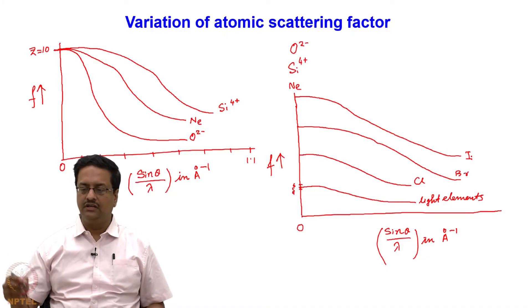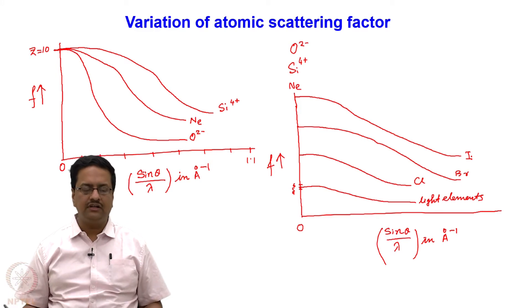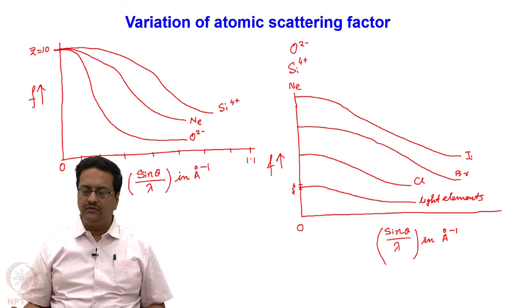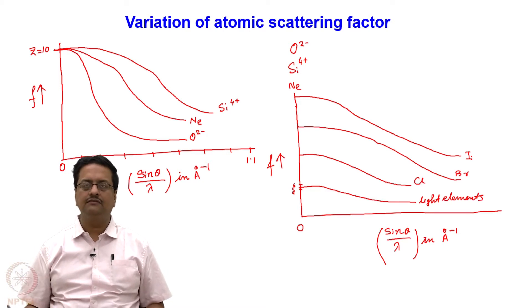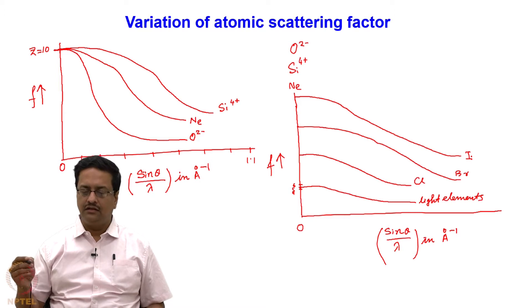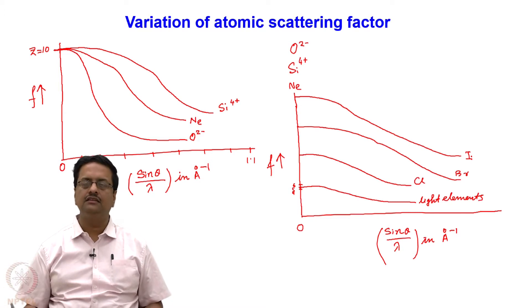Welcome back to the course of crystallography. In the previous lecture we were talking about the atomic scattering factor f, which we defined as the ratio of the amplitude of scattered radiation by an atom divided by the amplitude of scattered x-ray by a single electron. We understood the variation of atomic scattering factor with sin theta by lambda for different nuclei, and indicated that the scattering power of an element reduces drastically with increase in the scattering angle theta.